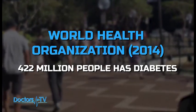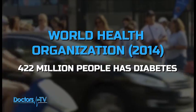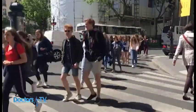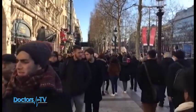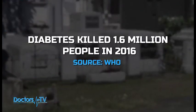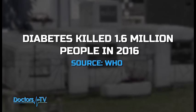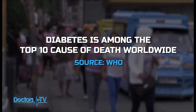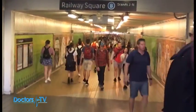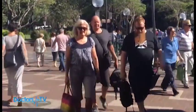Sa tala ng World Health Organization noong 2014, nasa 422 milyon na ang bilang ng mga taong mayroong sakit na diabetes. Anila, mabilis na lumalaki ang bilang ng nagkakaroon nito sa middle at low-income countries. Sa ulat ng WHO noong 2016, nasa 1.6 milyon na ang nasawi dahil sa sakit na ito. Kabilang din ang diabetes sa top 10 causes of death sa buong mundo. Kumpara sa pinagsamang bilang ng namamatay sa AIDS at breast cancer, higit na marami pa rin ang bilang ng namamatay sa diabetes.